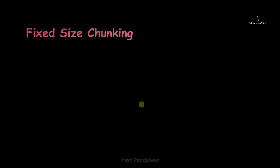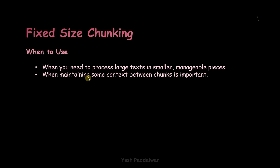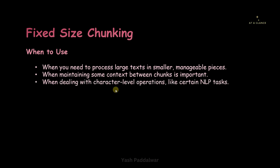Now let's see when to use this fixed size chunking strategy. The first reason is when you need to process large text into smaller, manageable pieces — that is the meaning of chunking. The next and most important reason is when you want to maintain some context between the chunks, which the chunk_overlap parameter handles by maintaining continuity and ensuring semantics are not lost. The third reason is when we have to deal with character-level operations like certain NLP tasks where we have to deal with scenarios at the character level.